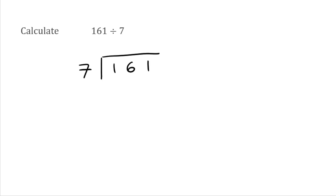First of all we see how many 7s go into 1. We can't fit any 7s into 1, so we put a 0 on the top. Then we carry over that 1 onto the next number, putting it in front of the 6. So now we've got 16 — how many 7s fit into 16? That would be 2, because 7 times 2 is 14, leaving us with a remainder of 2. That remainder we carry over to the next number and put it in front.